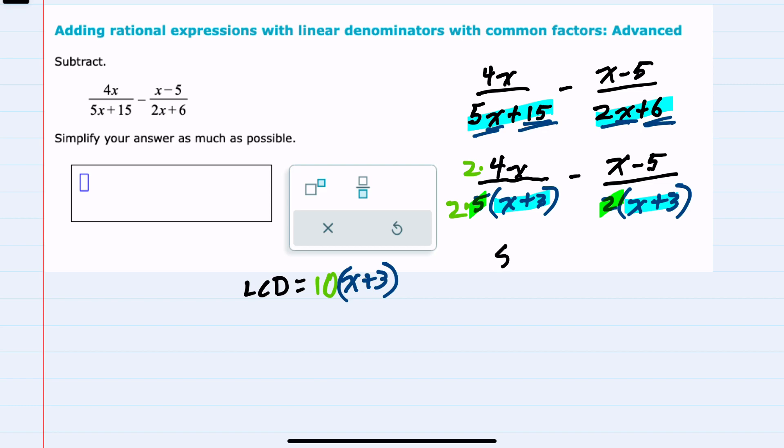So rewriting this would be 8x over 10 times x plus 3.